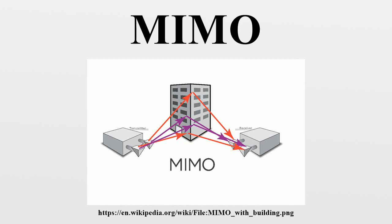TGn Sync, WWiSE, and a third proposal were merged to create what was called the Joint Proposal. In 2004, Airgo became the first company to ship MIMO OFDM products. Qualcomm acquired Airgo Networks in late 2006. The final 802.11n standard supported speeds up to 600 Mbit per second and was published in late 2009. Surendra Babu Mandeva and Araji Aswami Paul Raj founded BCM Communications in 2004 to produce MIMO OFDM chipsets for WiMAX. The company was acquired by Broadcom in 2010.